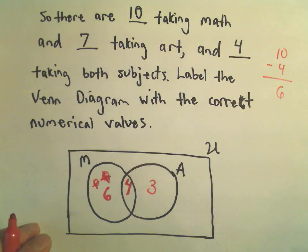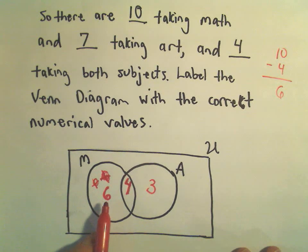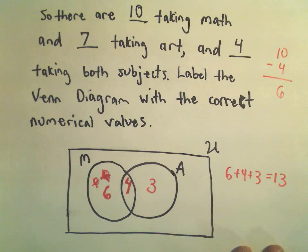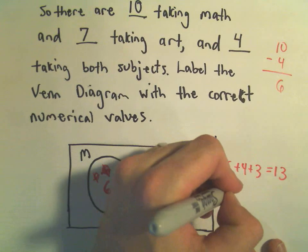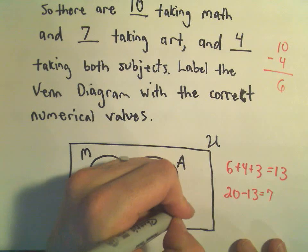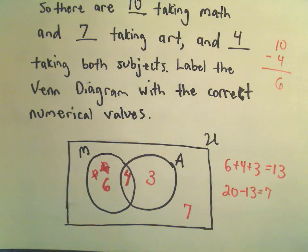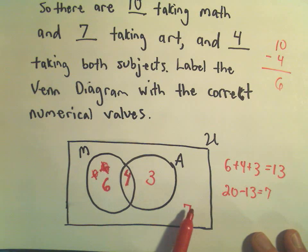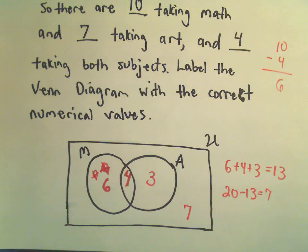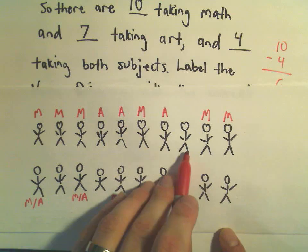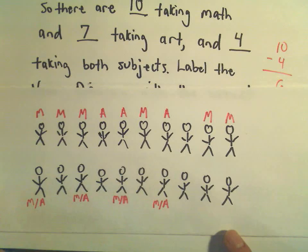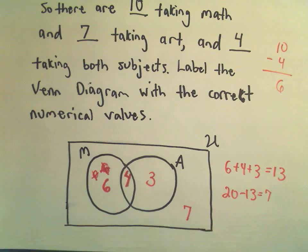You can also put a number on the outside. Notice if we add these together, we'll get six plus four plus three or thirteen. Well, our universe had twenty people. So if we take twenty minus thirteen, that gives us seven. We could stick a seven outside of both circles. And what that says is it says there are seven people who are taking neither math nor art. And we can go back and count. Let's see, there's one person here, two people, three, four, five, six. Hey, there are seven people, in fact, that are not taking either one of these classes.